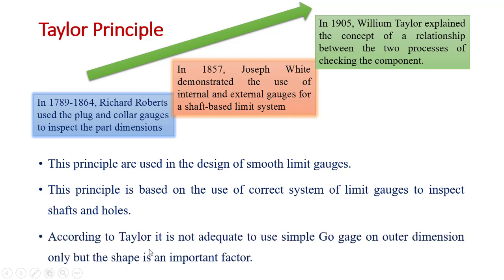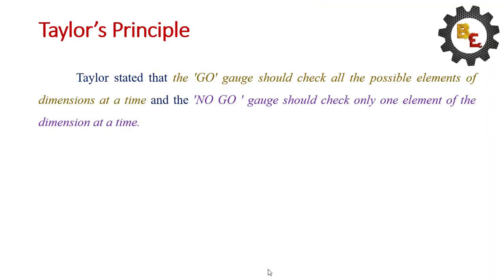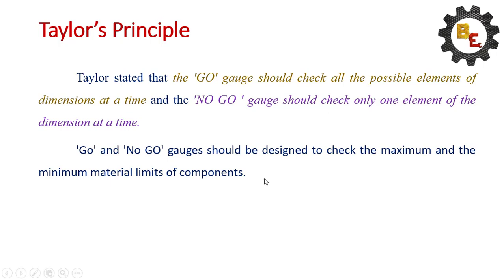According to Taylor, it is not adequate to use simple go gauge on outer dimensions only, but shape is an important factor. He insisted that not only the gauges check the dimensions but shape is also an important factor. He stated that go gauges should check all the possible elements of dimensions at a time. Go and no-go gauges should be designed to check the maximum and minimum material limits of components.